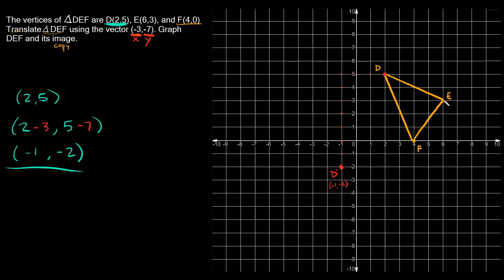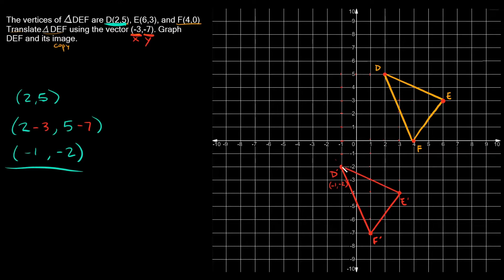Now let's move E: 3 left and 7 down gives E prime. Then F: 3 left and 7 down gives F prime. We draw in the translated triangle — that's our image, the copy of DEF, labeled D prime, E prime, F prime.